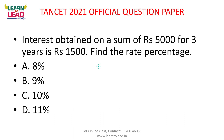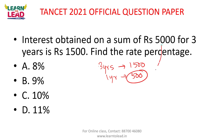Interest obtained on a sum of 5,000 for 3 years is 1500. Find the rate percentage. For 3 years, simple interest is 1500, so for 1 year it is 500. 5,000 level — percentage is 10%. Option C is the answer.